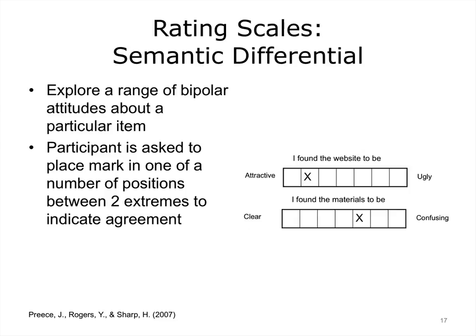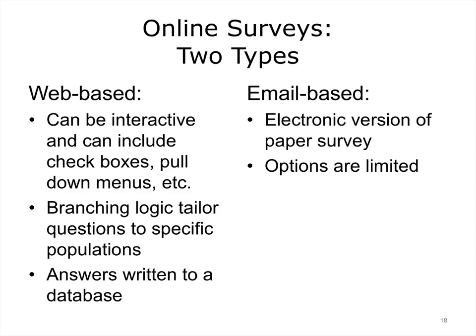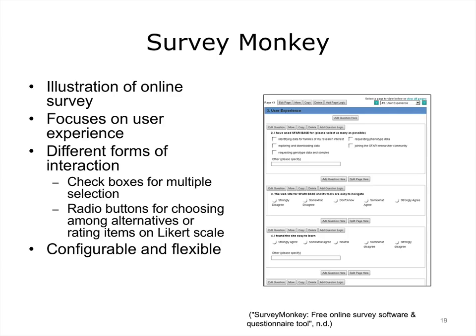Semantic differential rating scales are an alternative to Likert questions. They are convenient and effective only when a question can be expressed in terms of antonyms or polar opposites, and are less common than Likert questions. Online surveys are fast and convenient ways to reach a large base of people. They fall into two categories: web-based and email-based, with web-based being increasingly the most popular. These systems afford a range of interactivity which gives you more flexibility in how you ask your questions, and a huge advantage is that responses are written to a database, making it very easy to collect and analyze your data.